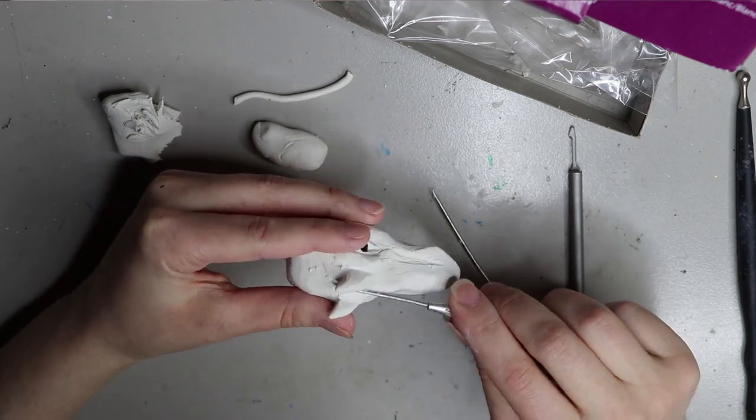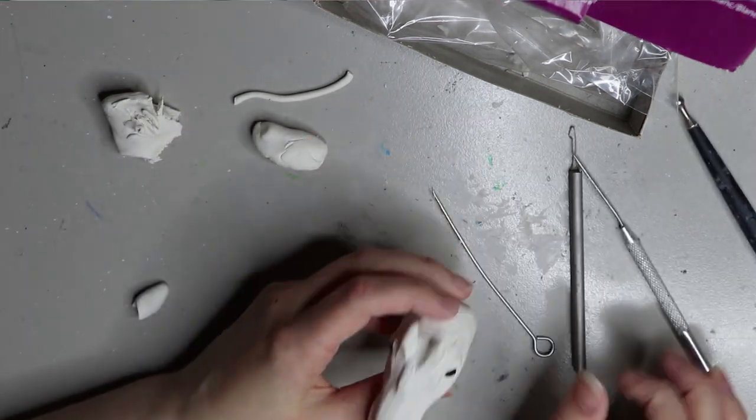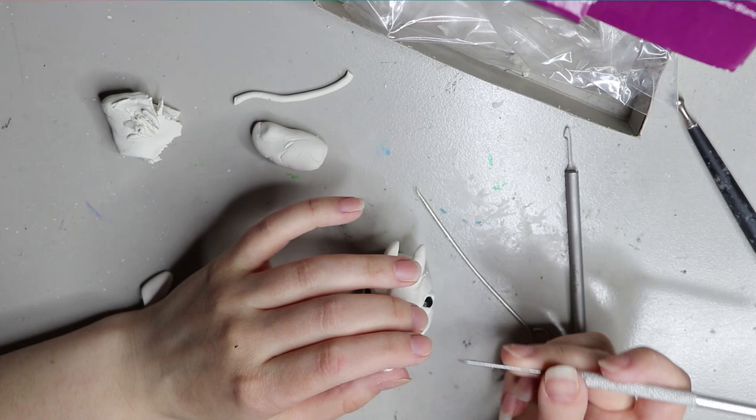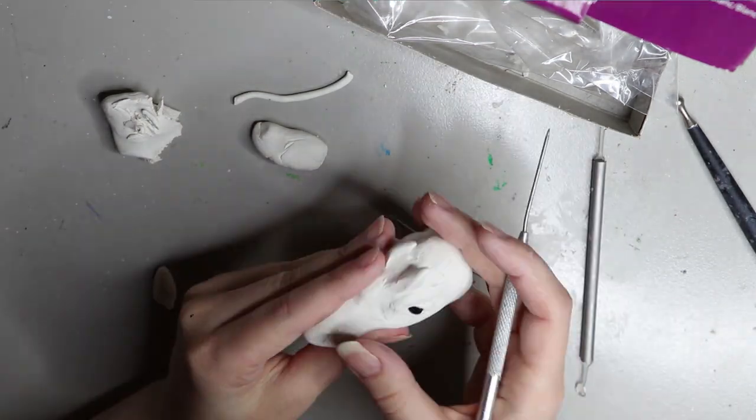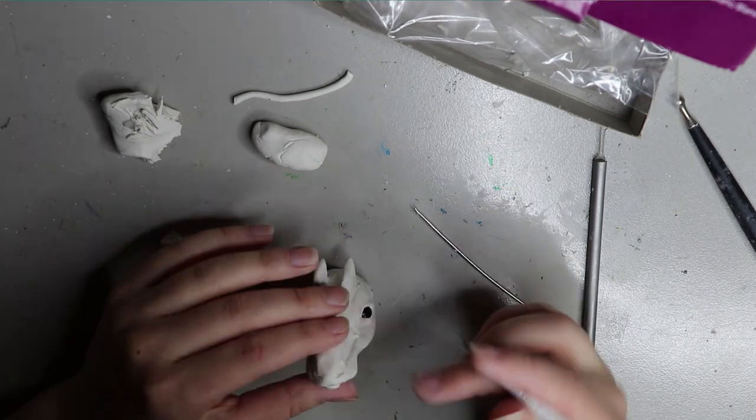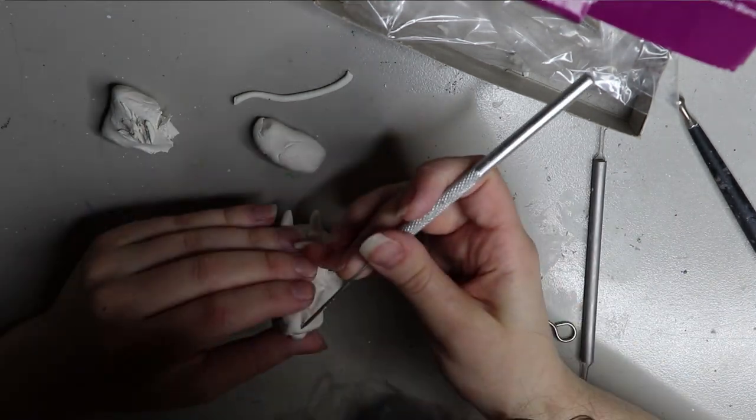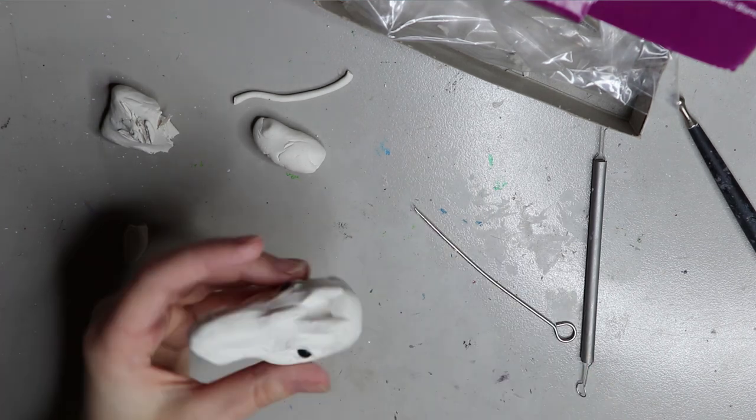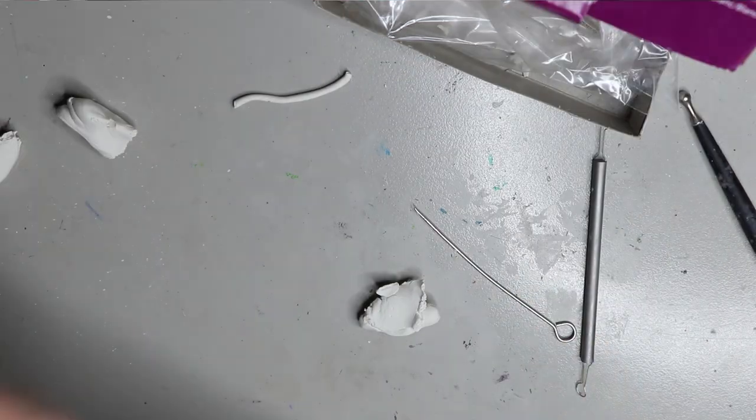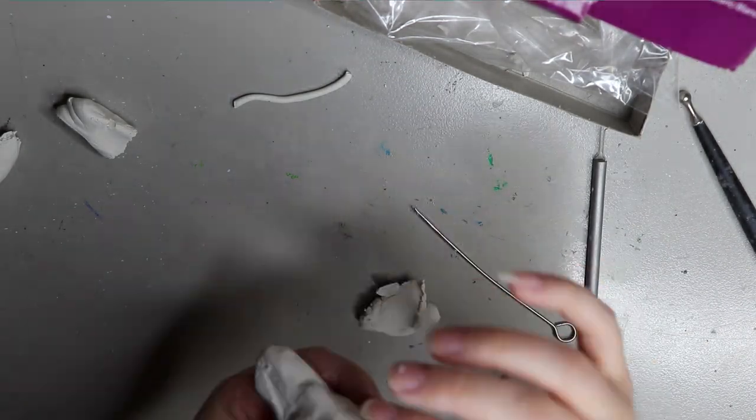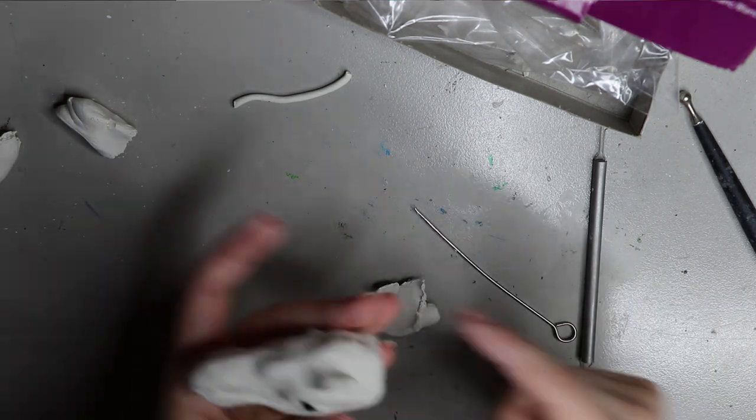Moving on to these little horn things—just like a giraffe, the Okapi has these little horns on their head. They're not like horn horns; they're covered in skin, kind of like a giraffe. I put them on and just sat with the placement for a little while to see if I was happy.